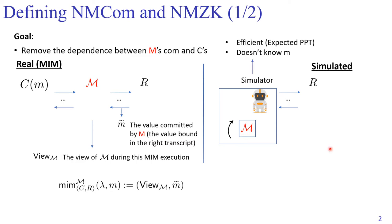The simulator is required to be efficient, and importantly, he does not know the value m committed in the real game by the left honest committer. At the end of this simulated world, the simulator outputs a tuple, and we say that a commitment scheme is non-malleable if these two tuples are computationally indistinguishable.